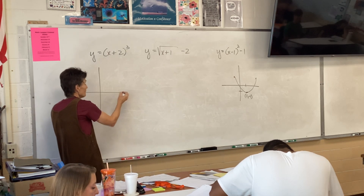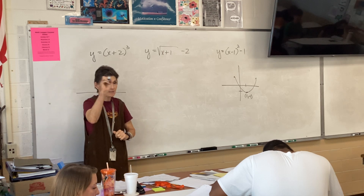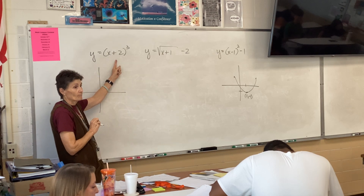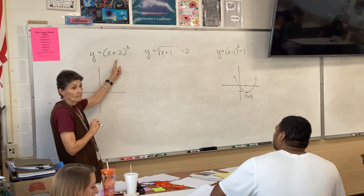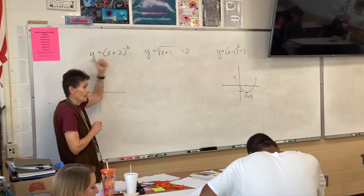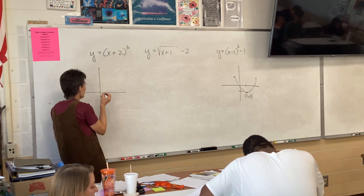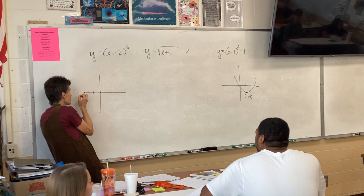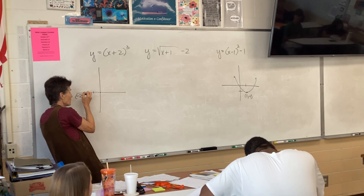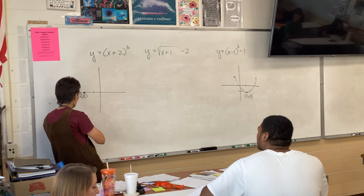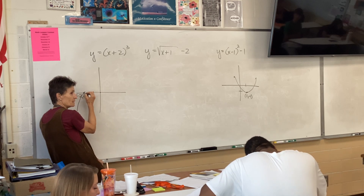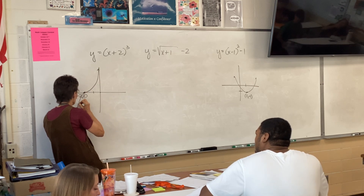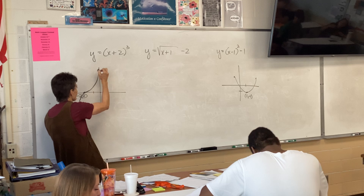What shape do we have here? Cubing — so that's our squiggly shape. How has it been moved? Left 2. So instead of squiggling through the origin it now squiggles through (-2, 0): I come up as though drawing a downward parabola, then curve and make an upward parabola through that point.